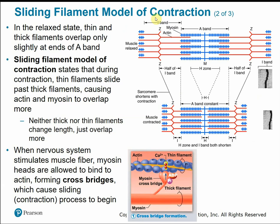Muscle contraction operates under the sliding filament model of contraction. This means the myofilaments that make up the sarcomeres are going to slide across or past one another to produce contraction. Normally, in the relaxed state, the thin and thick filaments only overlap a little bit at the ends of the A-bands.